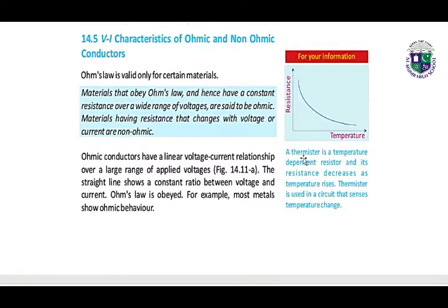A thermistor is a temperature-dependent resistor and its resistance decreases as temperature increases. Ohmic conductors have a linear voltage-current relationship over a large range of applied voltages. The current line shows a constant ratio between voltage and current — Ohm's law is obeyed. For example, most metals show Ohmic behavior.